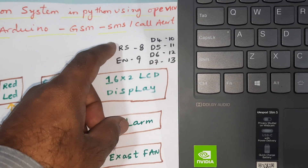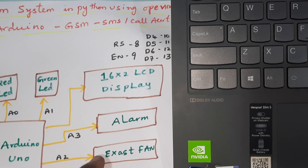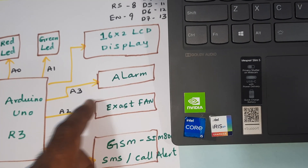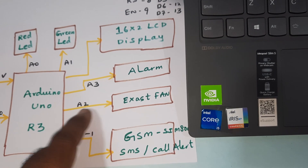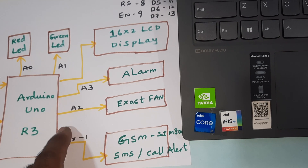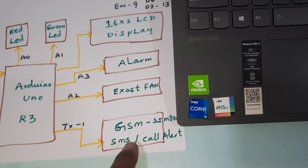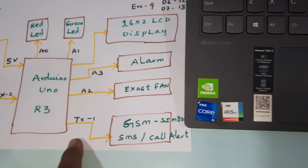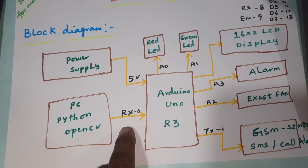The LCD is connected with RS, Enable, D4, D5, D6, D7 on pins 8, 9, 10, 11, 12, 13. One alarm is connected to A3, the exhaust fan is connected to A2, the GSM SIM 800L is connected to TX1, and OpenCV Python is connected to the RX0 pin.